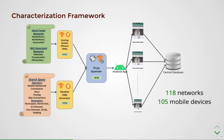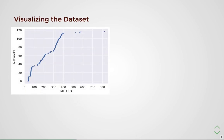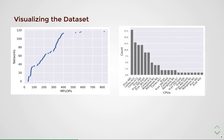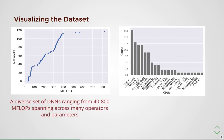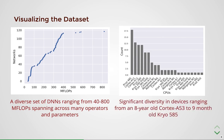Now we will visualize the dataset to understand the diversity of networks and mobile devices. We plot the floating point operations for every network and the histogram of CPUs for all 105 devices. The network set consists of a diverse set of DNNs — both existing and randomly generated — ranging from 40 to 800 megaflops, spanning across multiple operators and parameters. Similarly, the hardware set shows significant diversity with 22 unique CPUs ranging from the eight-year-old Cortex-A53 to the brand new Cryo 585.